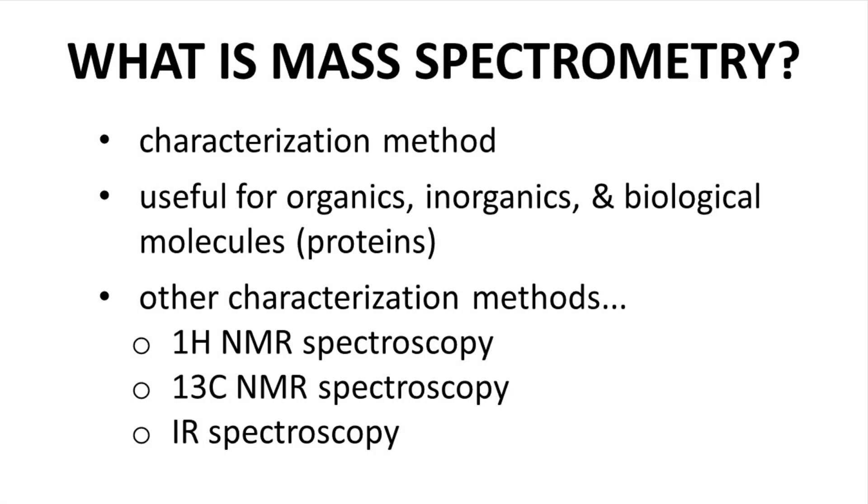What is mass spectrometry? Mass spectrometry, or MS, is a characterization method that is commonly used for organic molecules, though it is also used for all kinds of structures, from inorganic molecules to proteins.